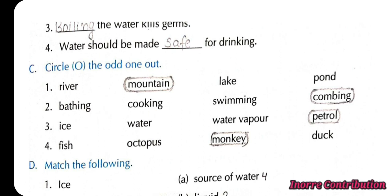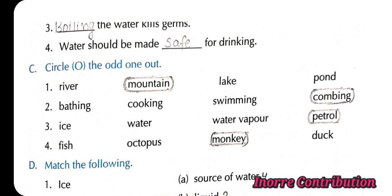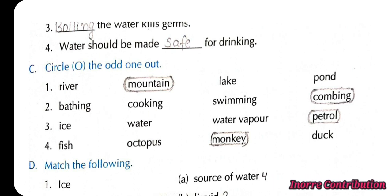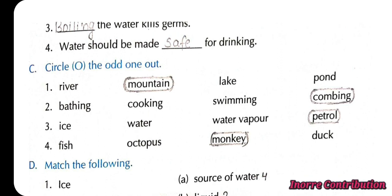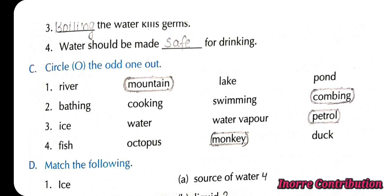Next exercise — circle the odd one out. For the first one it will be mountain. Second: combing. Third: petrol. And for the last one it will be monkey.